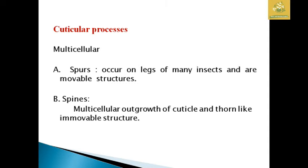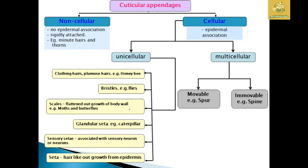Multicellular cuticular processes are of two types: spurs, which occur on the legs of many insects and are movable structures; and spines, which are multicellular outgrowths of cuticle with a thorn-like structure used for defence — they are immobile. The classification of cuticular appendages includes non-cellular (no epidermal association, e.g., thorns) and cellular types. Cellular types are unicellular (including setae, scales, glandular setae, sensory setae) and multicellular (movable spurs and immovable spines).